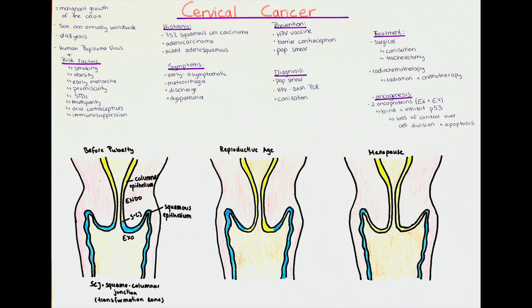In the exocervix, the cells are smaller and stacked on top of each other, which makes it more resilient to external influences. The transformation zone is the area where those two parts meet, and the glandular columnar cells transition into stratified squamous cells.